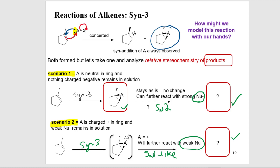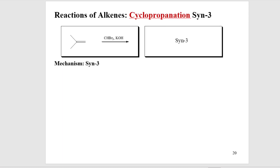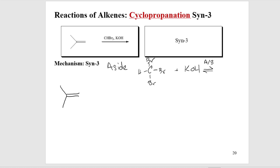Let's start with our first specific case: cyclopropanation. Cyclopropanation can undergo a SYN3 mechanistic motif. Let's start with the alkene. An aside on the reagents: CHBr3 in the presence of a base. What this is, is an acid-base reaction. When you mix these two reagents together, the base will do acid-base chemistry with the one proton you see, giving the electrons to the carbon.